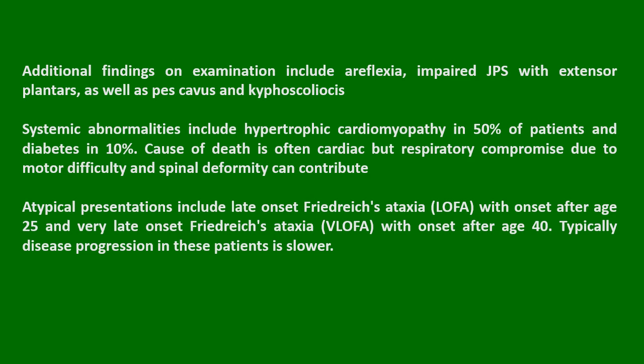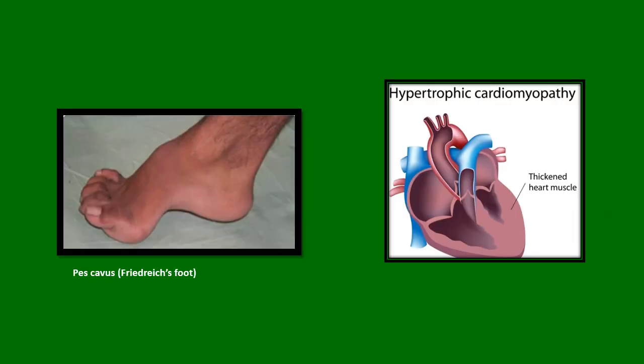Systemic abnormalities include hypertrophic cardiomyopathy in 50% of patients and diabetes in 10%. Cause of death is often cardiac, but respiratory compromise due to motor difficulty and spinal deformity can contribute. Atypical presentations include late-onset Friedrich's Ataxia with onset after age 25, and very late-onset Friedrich's Ataxia with onset after age 40; disease progression in these patients is typically slower. Figures show pes cavus, often referred to as Friedrich's foot, and hypertrophic cardiomyopathy.